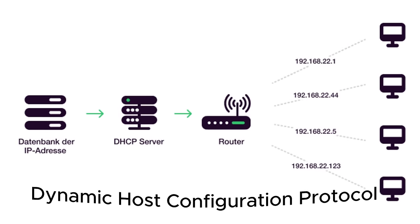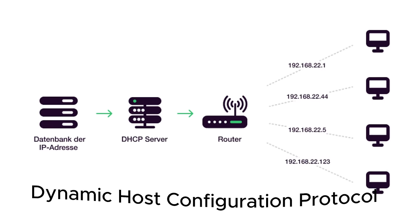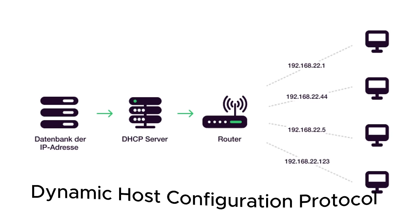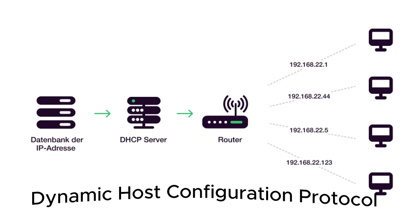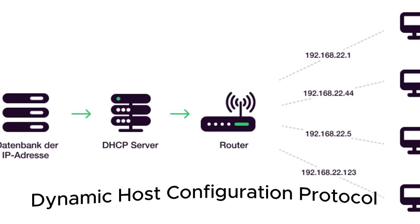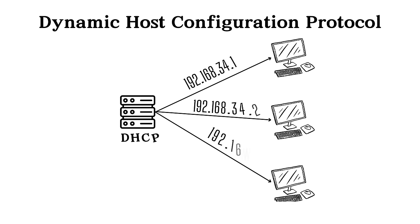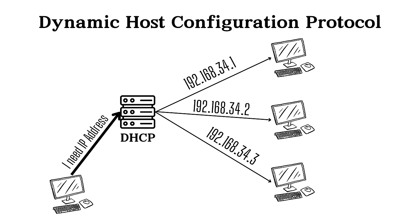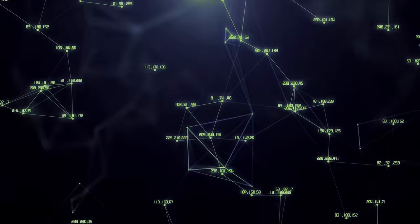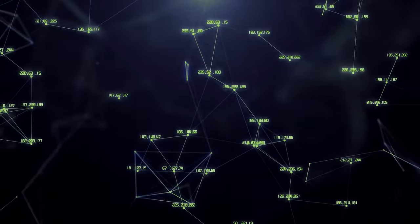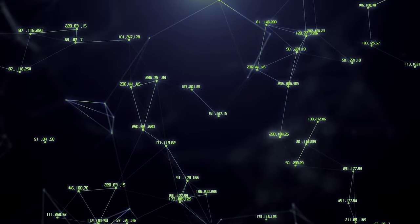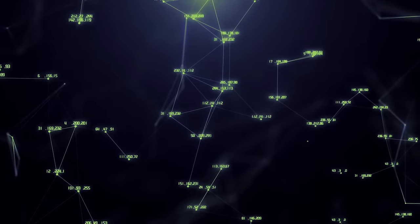The next protocol is DHCP — Dynamic Host Configuration Protocol. DHCP dynamically assigns IP addresses, meaning that instead of having a fixed IP address, your device gets a new IP address each time it connects to a network. When a device joins a LAN, it sends a request to the DHCP server, which assigns an IP address for a specific period known as a lease. Each time you connect, you're likely to receive a different dynamic IP address, usually within the same range. This dynamic allocation helps manage and optimize the use of available IP addresses within the network.